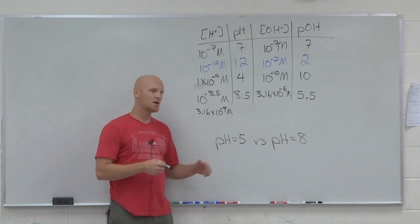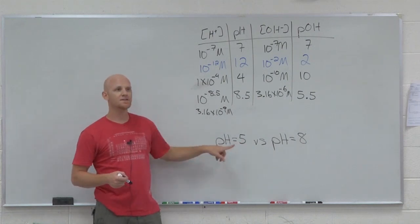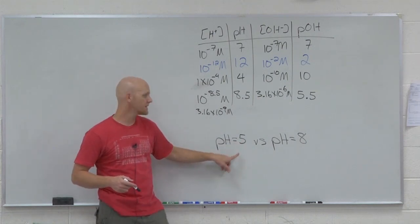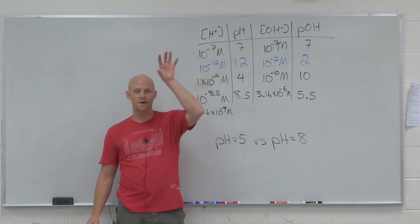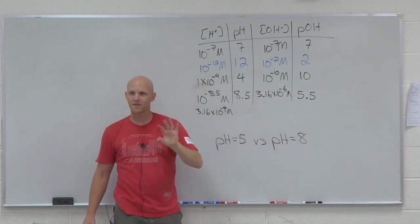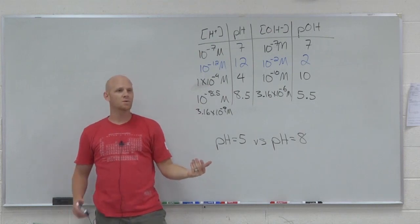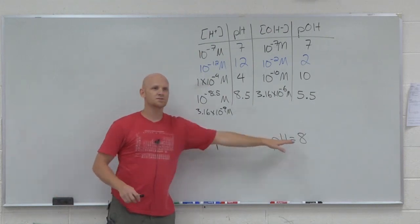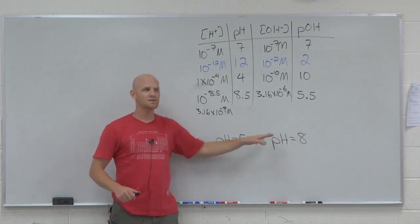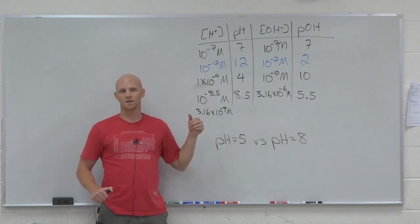And you could figure that out, because you'd be like, oh yeah, pH 5, the H plus is 10 to the minus 5 molar. pH 8, the H plus is 10 to the minus 8 molar. And 10 to the minus 5 molar over 10 to the minus 8 molar is a thousand times more acidic in this case. So you could figure it out. But the big thing here is you can compare them directly, just remembering that the pH scale is a log base 10 scale.